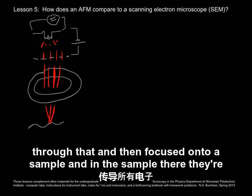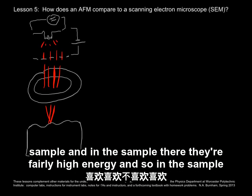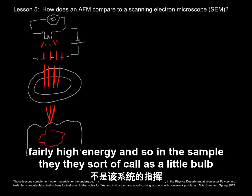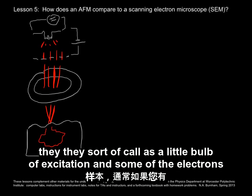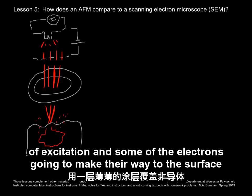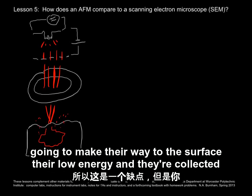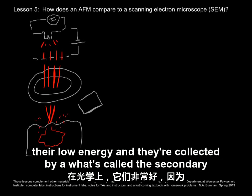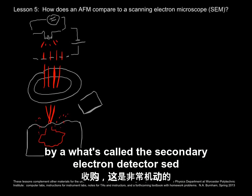In the sample, the electrons are fairly high energy, and they cause a little bulb of excitation. Some of the electrons make their way to the surface — they're low energy — and they're collected by what's called a secondary electron detector, or SED.